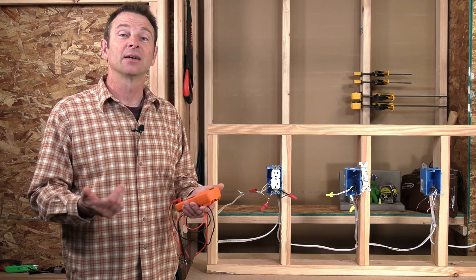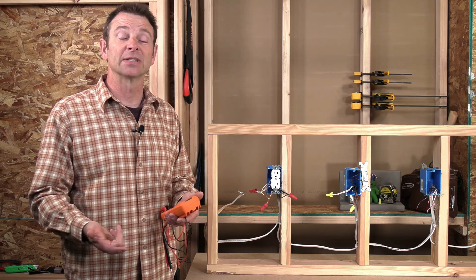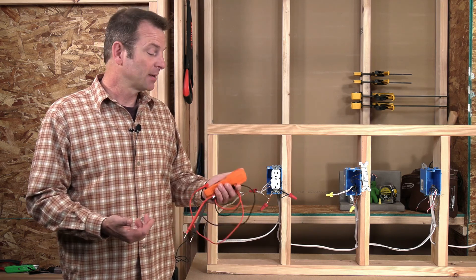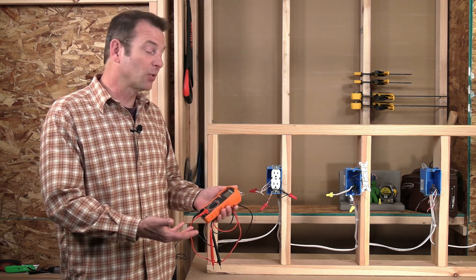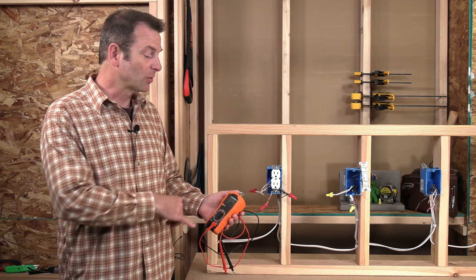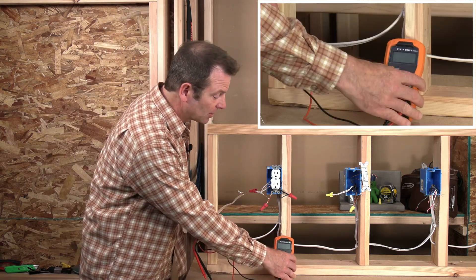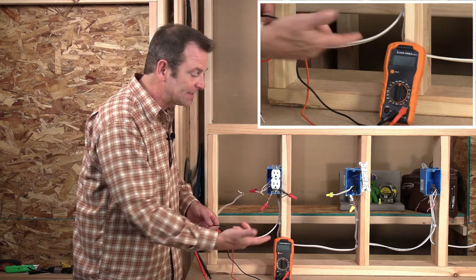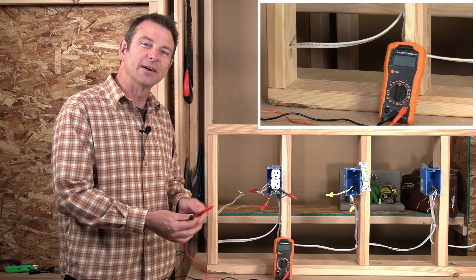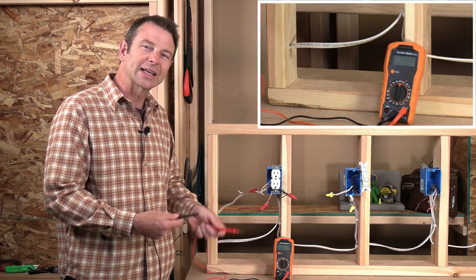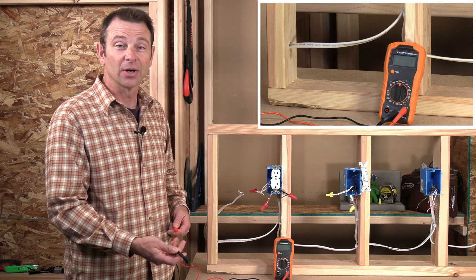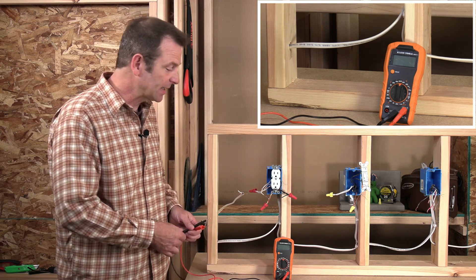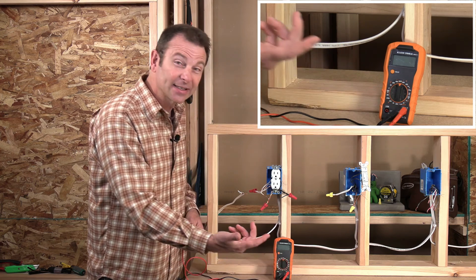You will be able to do this continuity test for resistance with the multimeter that you have. This one might be a little different than yours, but they're all similar. They're going to have a digital readout on them and there'll be a dial. There'll be a couple of probes that are going to get connected to one end of a conductor or a circuit and then to a second end. That's what we're testing and there's a bunch of settings on the dial.